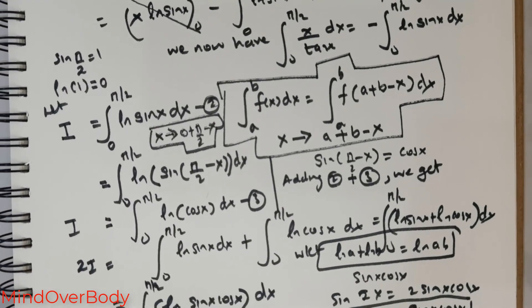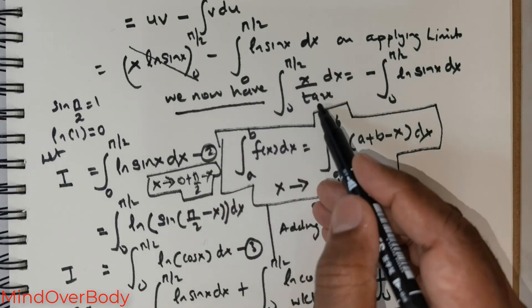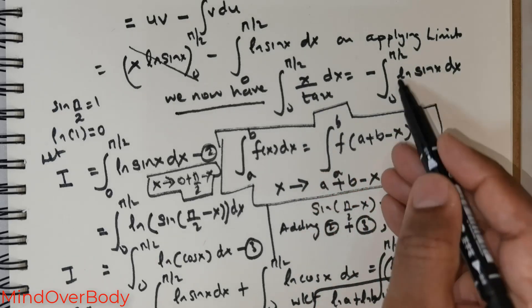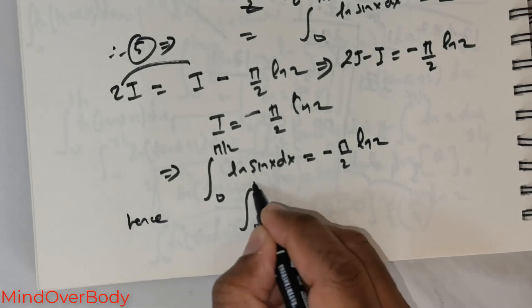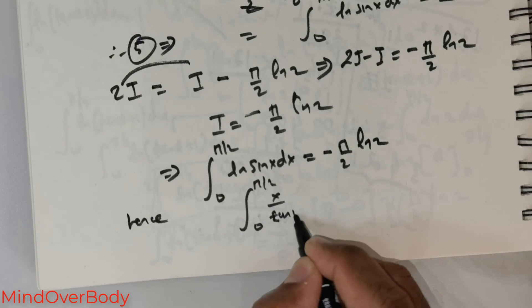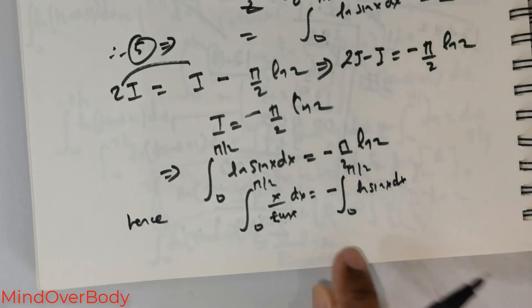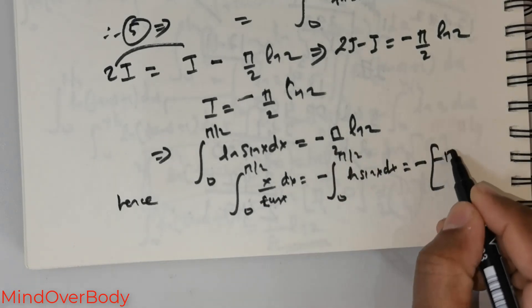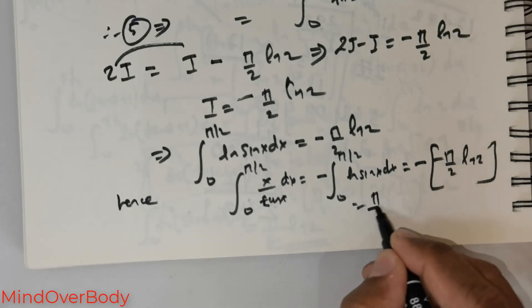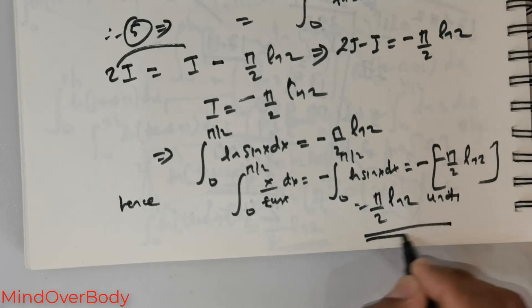Returning to the original problem: the integral from 0 to π/2 of x/tan(x) dx equals negative the integral from 0 to π/2 of ln(sin x) dx = −(−π/2 · ln 2) = π/2 · ln 2. So the final answer is π/2 · ln 2. Thank you everybody.